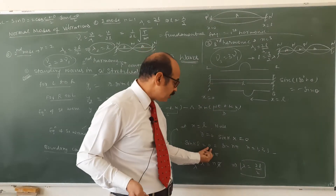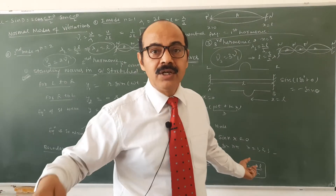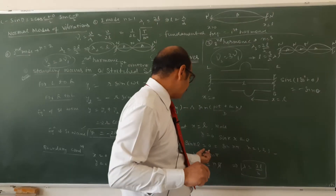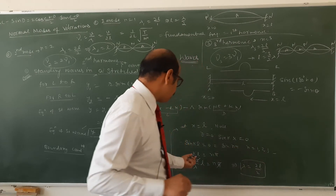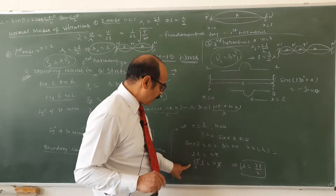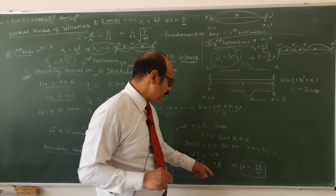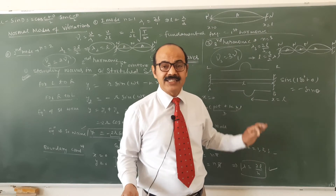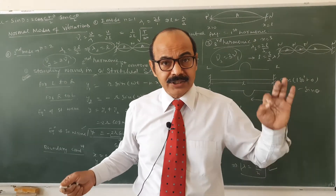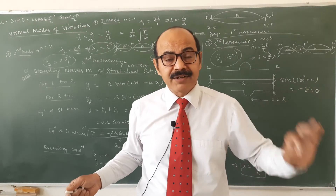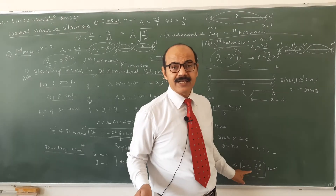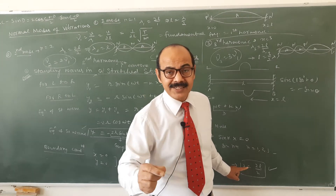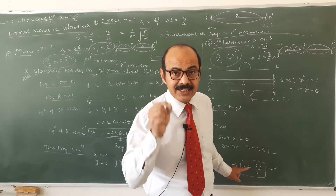sin(kL) = 0, और sin की general values जहाँ 0 होती हैं: sin π, sin 2π, sin 3π, sin 4π — sin में जितने भी integral multiples होते हैं π के, वो सब 0 होते हैं. तो kL = nπ, n = 1, 2, 3... Since k = 2π/λ, इसलिए (2π/λ)·L = nπ → λ = 2L/n. यह बहुत important equation है, λ = 2L/n, the general equation of standing wave in a stressed string.